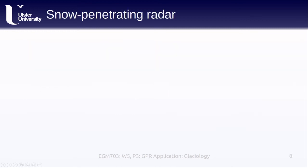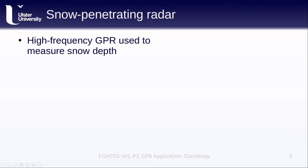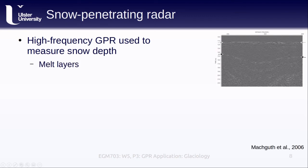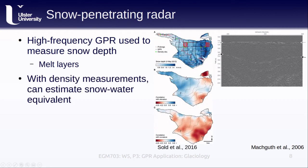At the other end of the depth scale, GPR can also be used to measure snow depths, typically using higher frequencies than what we see for very thick ice. One of the things we can see with GPR is the presence of melt layers within the snowpack. The line in the middle of the radargram indicates the transition from snow to firn, which is snow that has survived through a summer melt season and into the next winter. Because the firn surface has typically melted and refrozen, it usually has a noticeable crust that shows up in the radar image. With measurements of snow density, we can also use GPR-derived snow depths to estimate the total amount of water contained within the snowpack — this is the snow water equivalent.